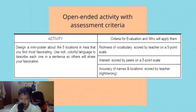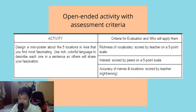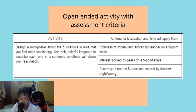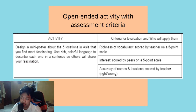The next table is the open-ended activity with assessment criteria. As you have an activity, you also have criteria for evaluation and who will apply it. For example, the activity: 'Design a mini poster about five locations in Asia that you find most fascinating. Use rich, colorful language to describe each one in a sentence, so others will share your fascination.' The criteria include richness of vocabulary scored by teacher on a five-point scale, interest of the activity scored by peers on a five-point scale, and accuracy of names and locations scored by teacher as right or wrong.